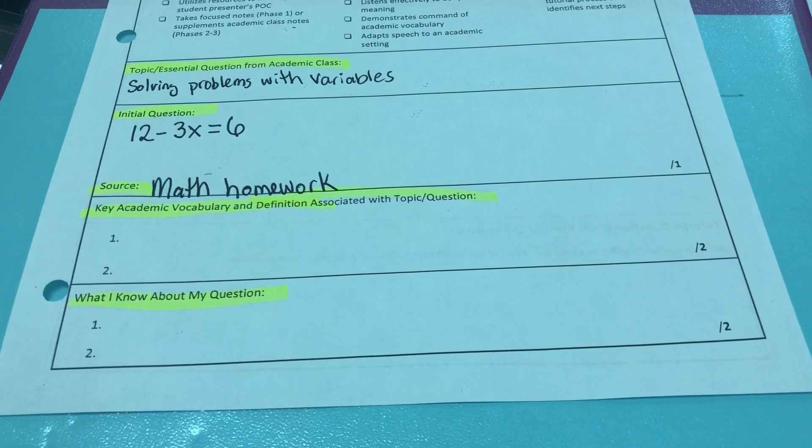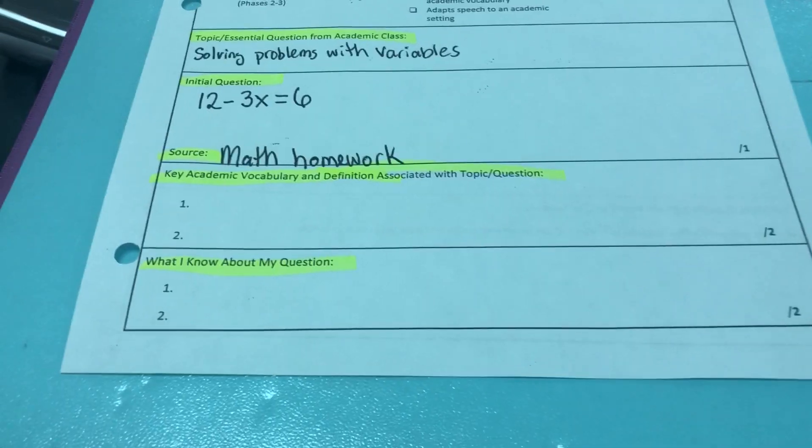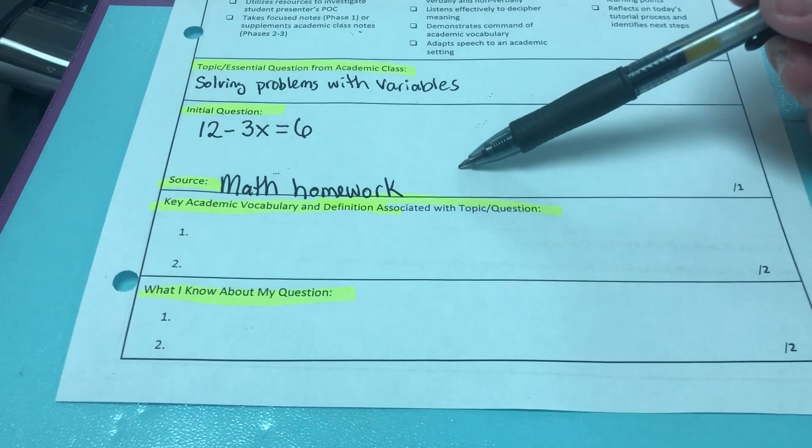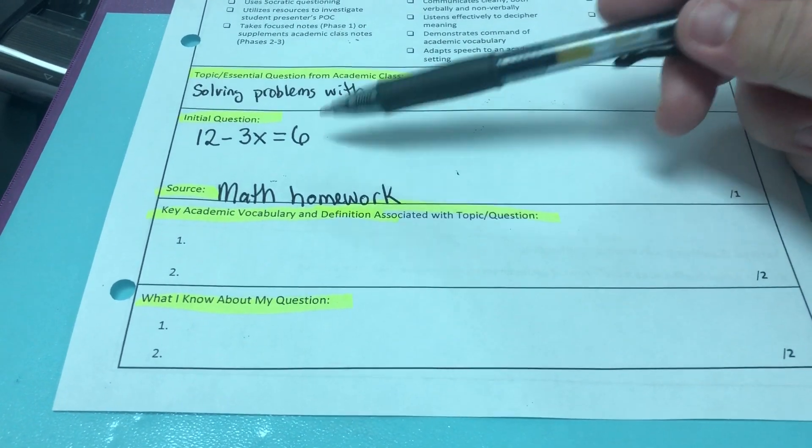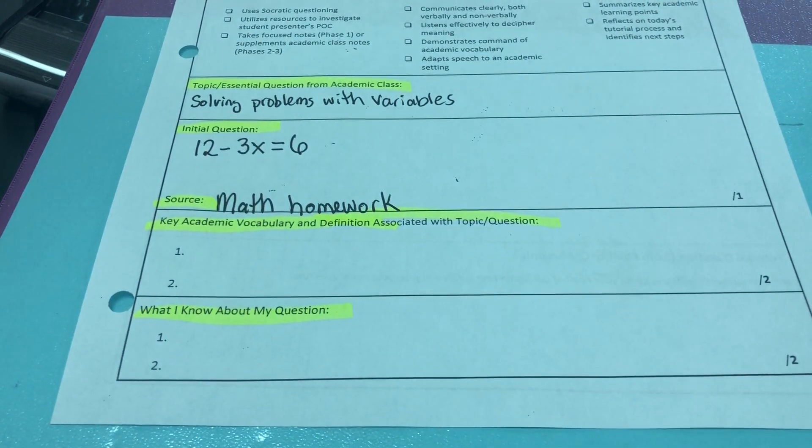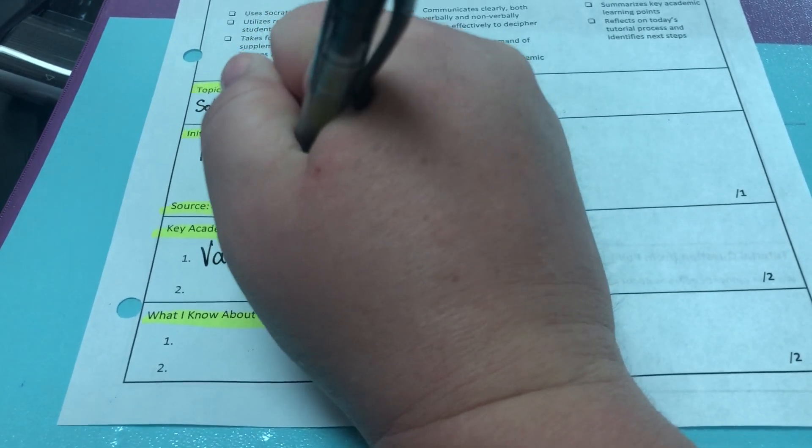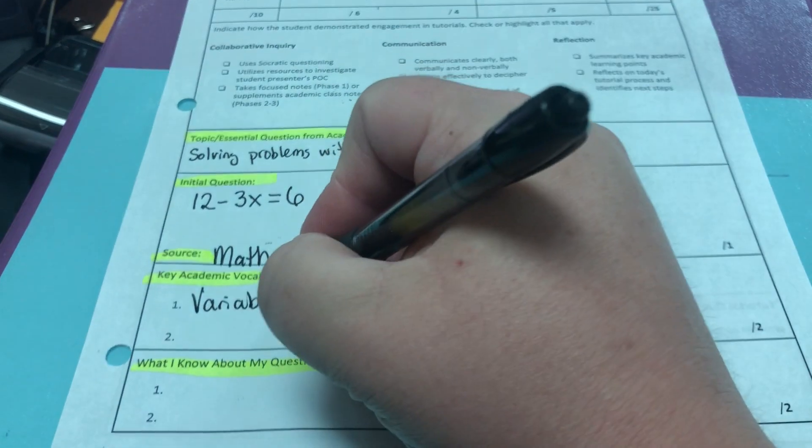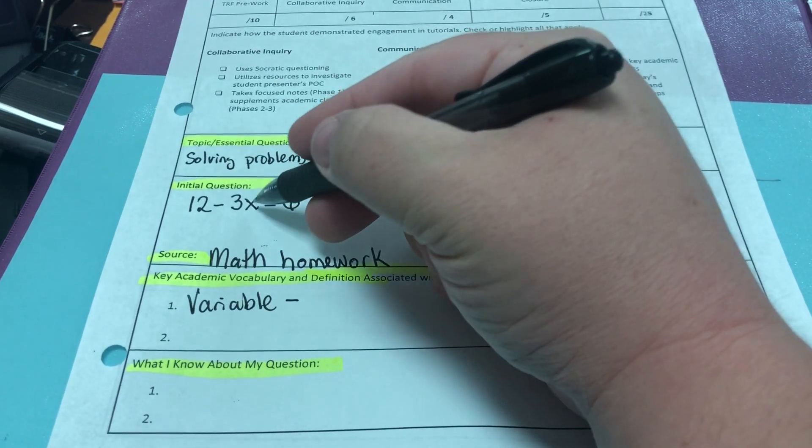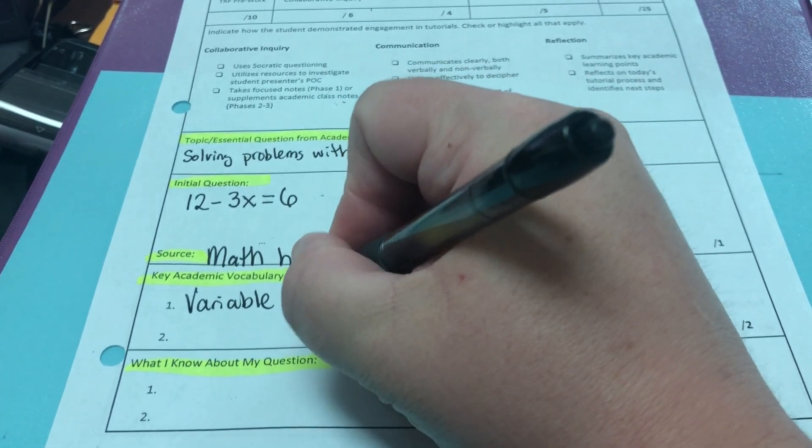Then key academic vocabulary is something that you know that relates to your initial question that might help to solve it. So in this, I guess I could say that a variable - variables are the letters that represent a number in math.